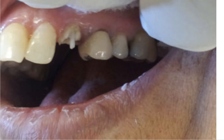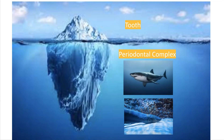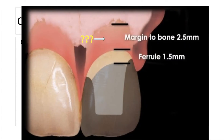Here we have an iceberg analogy: the tip of the iceberg is the tooth, and what's underneath the surface is the periodontal complex. There might be things we are unaware of — great white sharks, electric eels — things we're not accounting for that might bite us in the long run and compromise the outcome. We need to pay attention to what's under the surface, including understanding the ferrule and how much tooth structure is available underneath the margin.